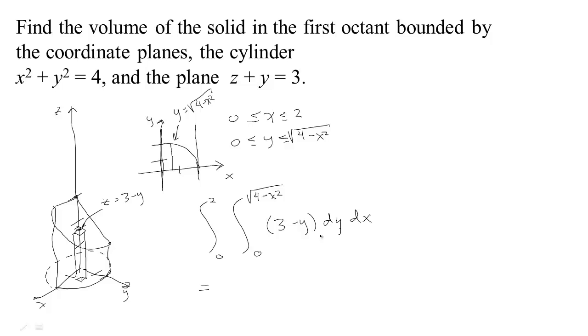So to do that, I just need to find an antiderivative for this with respect to y, which would be 3y minus 1 half y squared, so we get the integral from 0 to 2. When we plug in our bounds here, we plug in the square root of 4 minus x squared, we get 3 times the square root of 4 minus x squared minus 1 half, if you square the square root, you just get plain 4 minus x squared.